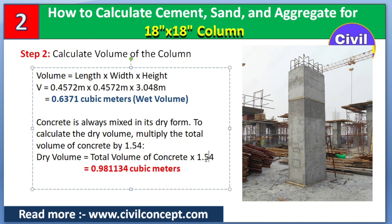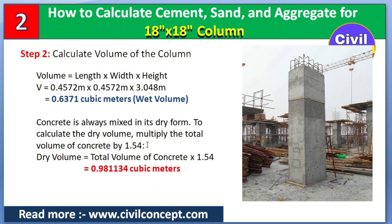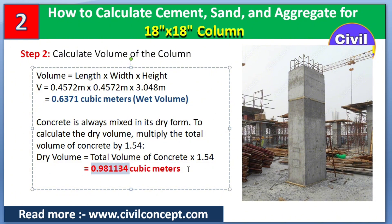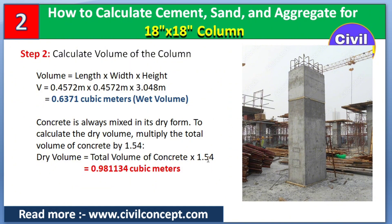We need to take 52 to 55 percent more than the wet volume. So if we have 0.6371 cubic meters of wet volume, we multiply by 1.54 to get the dry volume. If you want to take 52 percent, multiply by 1.52 instead. After calculating, we get 0.981134 cubic meters of dry volume. Concrete is always mixed in dry form, so we multiply the total volume by 1.54, depending on the percentage — you can take 52 to 54 percent.